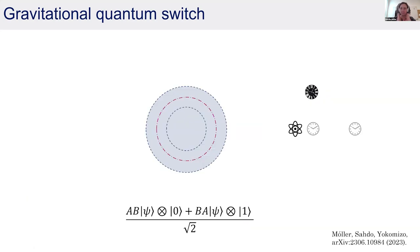So we have performed the gravitational quantum switch with three falling observers — Alice, Bob, and the target — and they are able to factorize after the protocol. Now let's compare this protocol with the other protocols I commented on at the beginning of the talk.